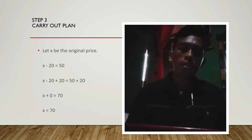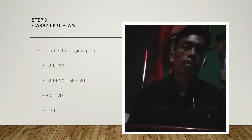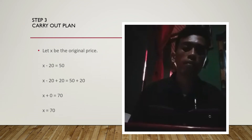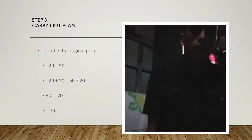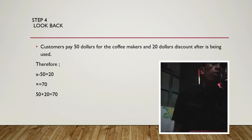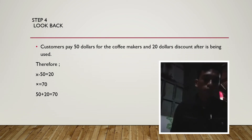Step 3, carry out the plan. Let X be the original price. The equation is: X minus 20 equals 50. To solve, X minus 20 plus 20 equals 50 plus 20, so X equals 70. For Step 4, look back — we verify using the given information: the customer pays $50 and the discount is $20. Therefore, X minus 20 equals 50, and X is equal to 70. The original price of the coffee maker is $70.